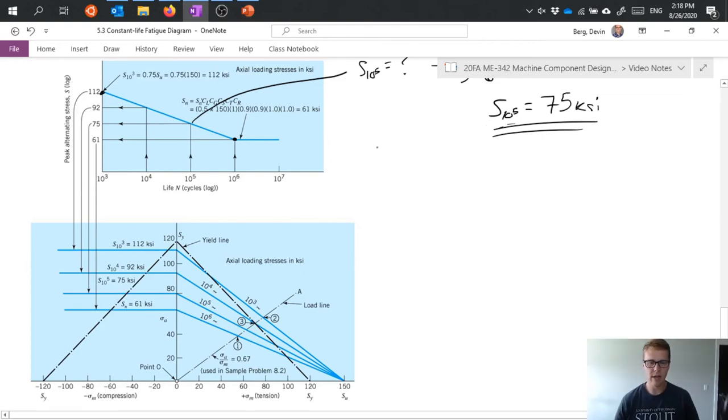Now to give us something to solve for let's go ahead and say that we have an alternating load between 1000 pounds and 5000 pounds and we want to design for a safety factor of two. And basically what we're talking about is what diameter of our round shaft that we're applying this load to would result in a safety factor of two.